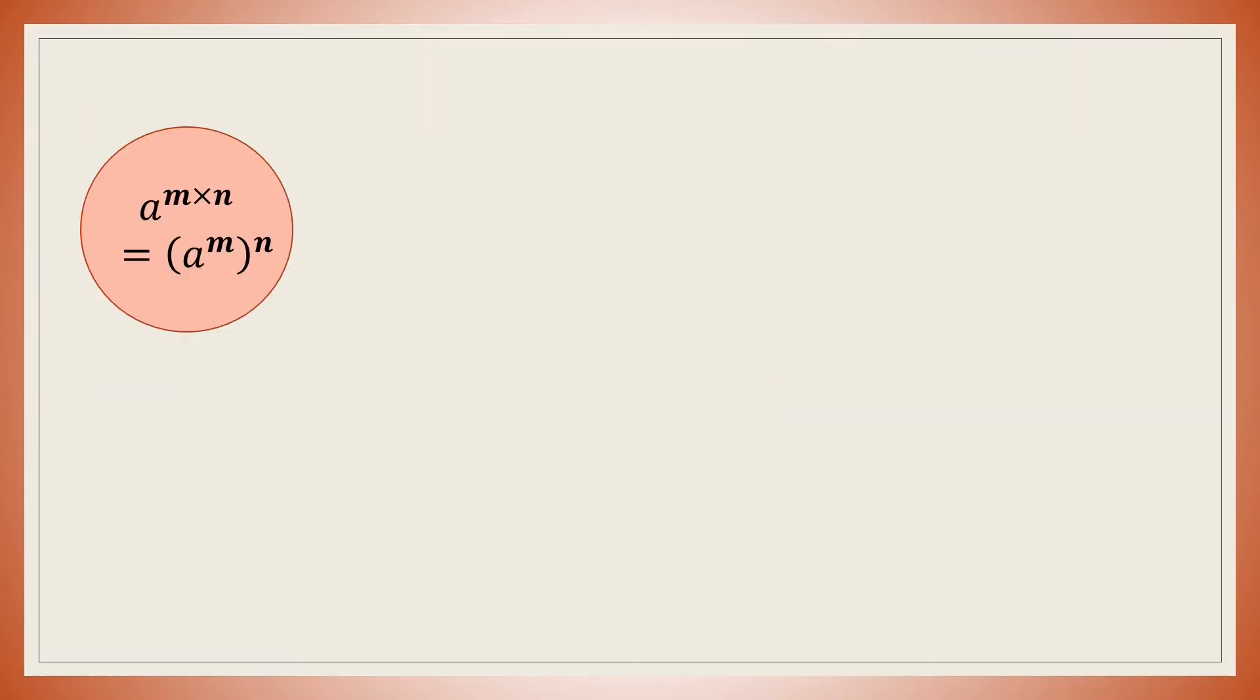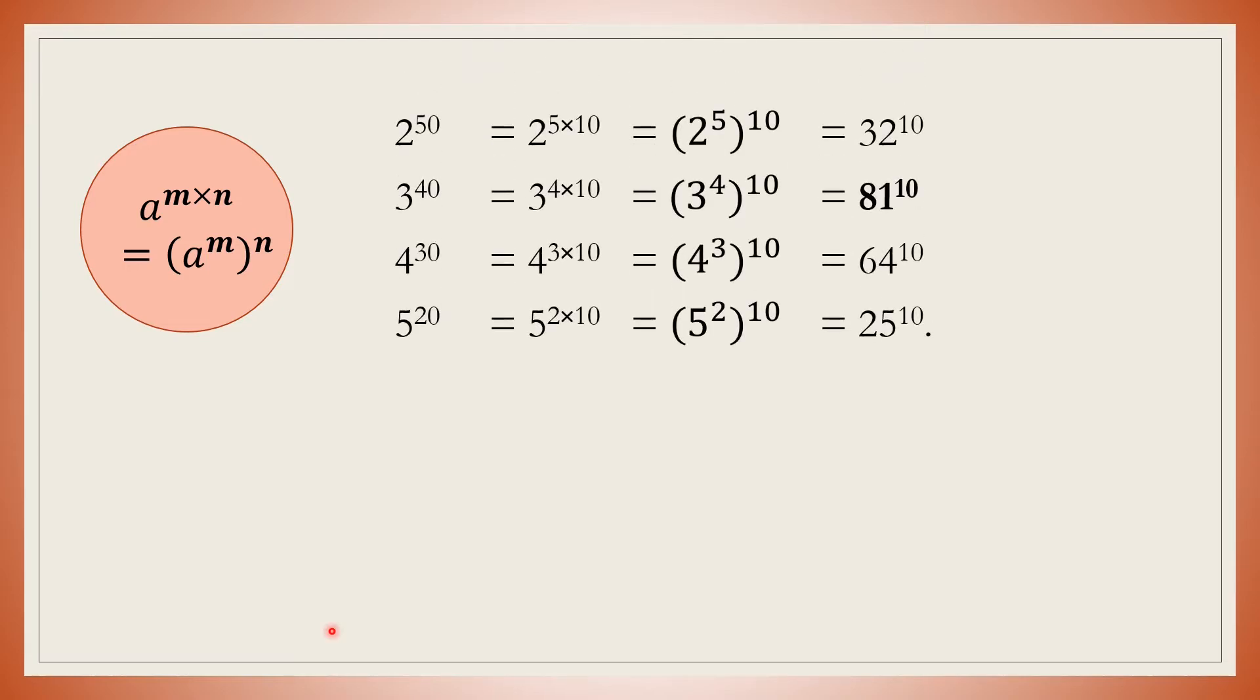Let us make use of the formula a power m into n equals a power m the whole power n. Here, in option A, 2 power 50 equals 2 power 5 into 10. Using the given formula, we can write it as 2 power 5 the whole power 10, which equals 32 power 10.